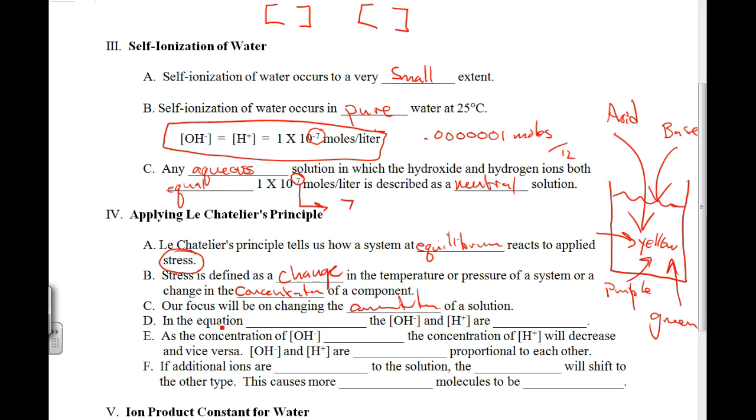In the equation of H2O goes to H plus plus OH minus. The OH minus and the H plus are interdependent. We'll have to pause and come back later.